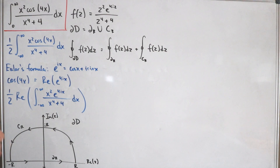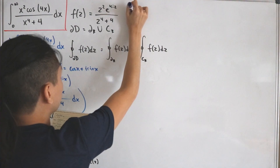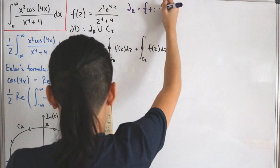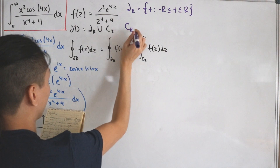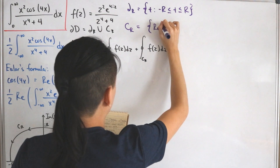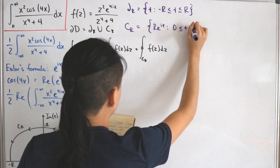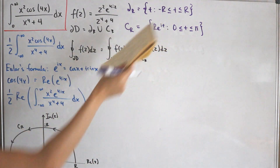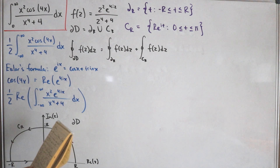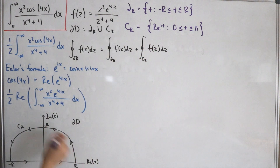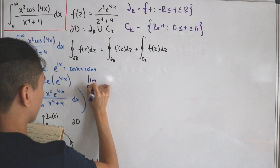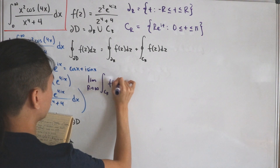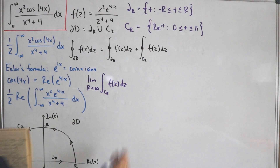We need parameterization equations. ∂R is parameterized as t with −R ≤ t ≤ R, and C_R is parameterized as r·e^(it) with 0 ≤ t ≤ π, constructing the upper semicircle. Now we calculate the arc length curve: we take the limit as R approaches positive infinity of the integral over C_R of f(z) dz.